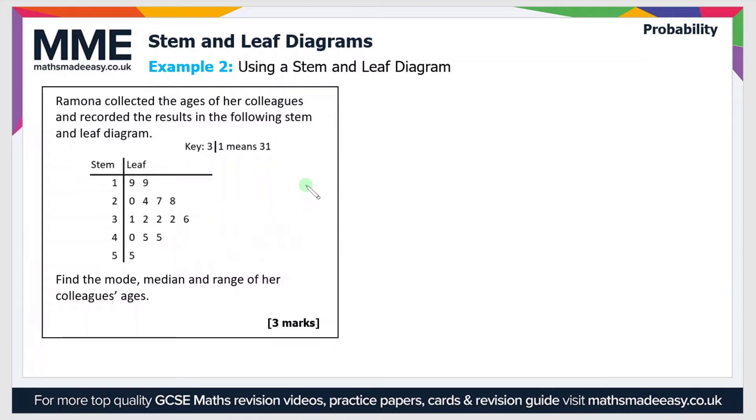Find the mode, the median and the range of her colleagues' ages. Now if you're not familiar with these terms there is a video that we have on the mean, the mode, the median and the range so I suggest that you go and check that out if you're not familiar. But otherwise let's continue. So the mode is the most common value and as we can see in the 30 stem the leaf of two, that gives us a value of 32. That appears three times which is more than any other value so therefore the mode is 32.